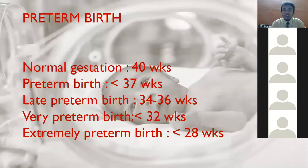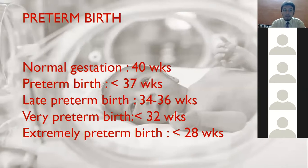Preterm birth is classified as follows: normal gestation is 40 weeks; preterm birth is less than 37 weeks; late preterm is 34 to 36 weeks; very preterm is less than 32 weeks; and extremely preterm is less than 28 weeks. This is how we subclassify preterm birth.